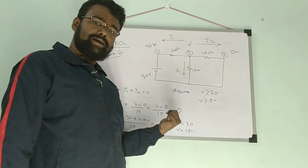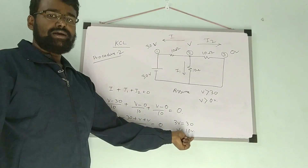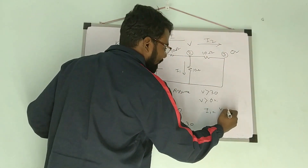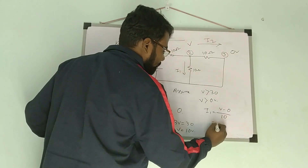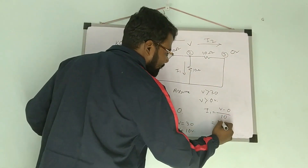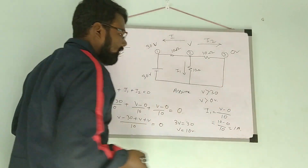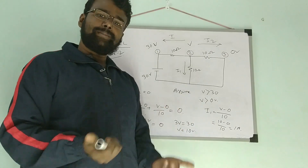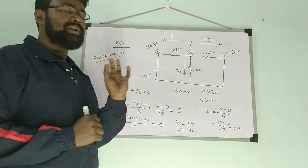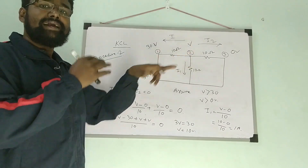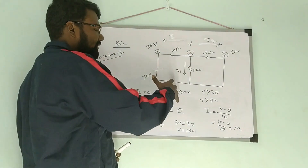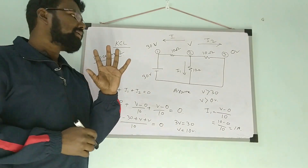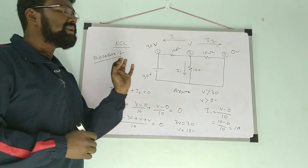In Procedure 1, we also found V equals 10 volts. So the value of I1 is V minus 0 over 10. Putting the value of V: 10 minus 0 over 10 equals 1 ampere. We see that in both Procedure 1 and Procedure 2, the answer is 1 ampere. But in Procedure 2, it is simpler — by assuming V is greater than all node voltages, there is no confusion about signs. That's why Procedure 2 is the simpler procedure.